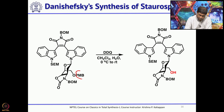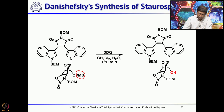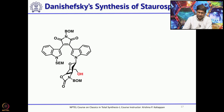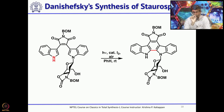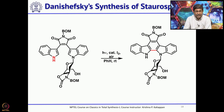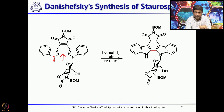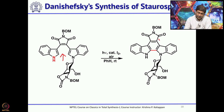The first step is to remove the PMB group — because you want to convert that position to CH2I. Remove the PMB with DDQ to get the primary alcohol, then remove the SEM using TBAF to get the NH. Then the compound is subjected to photochemical conditions in the presence of catalytic iodine under aerobic conditions. This promotes electrocyclic ring closure of the hexatriene to give a cyclohexadiene, which is then oxidized with catalytic iodine under aerobic conditions to give the aromatic product.